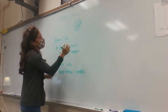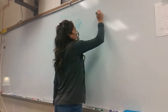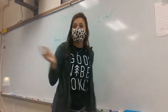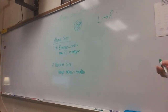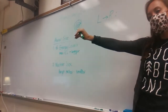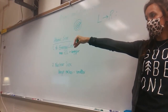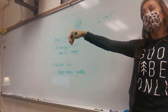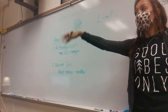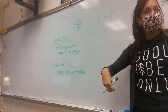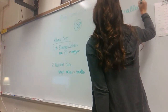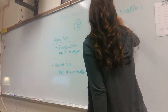So our periodic trend for atomic size: as we move from left to right, we're looking at atoms in the same period with the same number of energy levels. As we go left to right, we're adding protons — atomic number is going up — so our atoms are getting smaller. Same number of energy levels, but the nucleus is getting bigger, so atoms get smaller left to right.